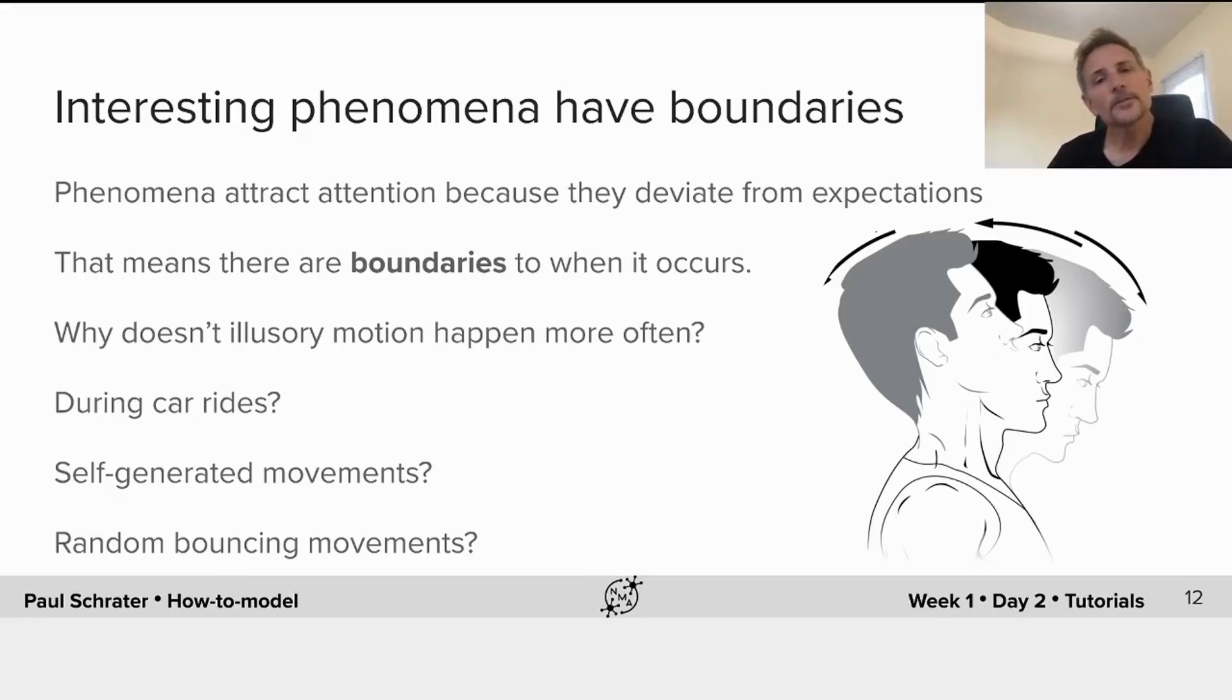It's important to ask yourself certain questions anytime you find a scientific phenomena. Why doesn't this happen more often? Why doesn't it occur under other conditions? For instance, why doesn't illusory motion occur when you rock your head back and forth, which also generates optic flow?